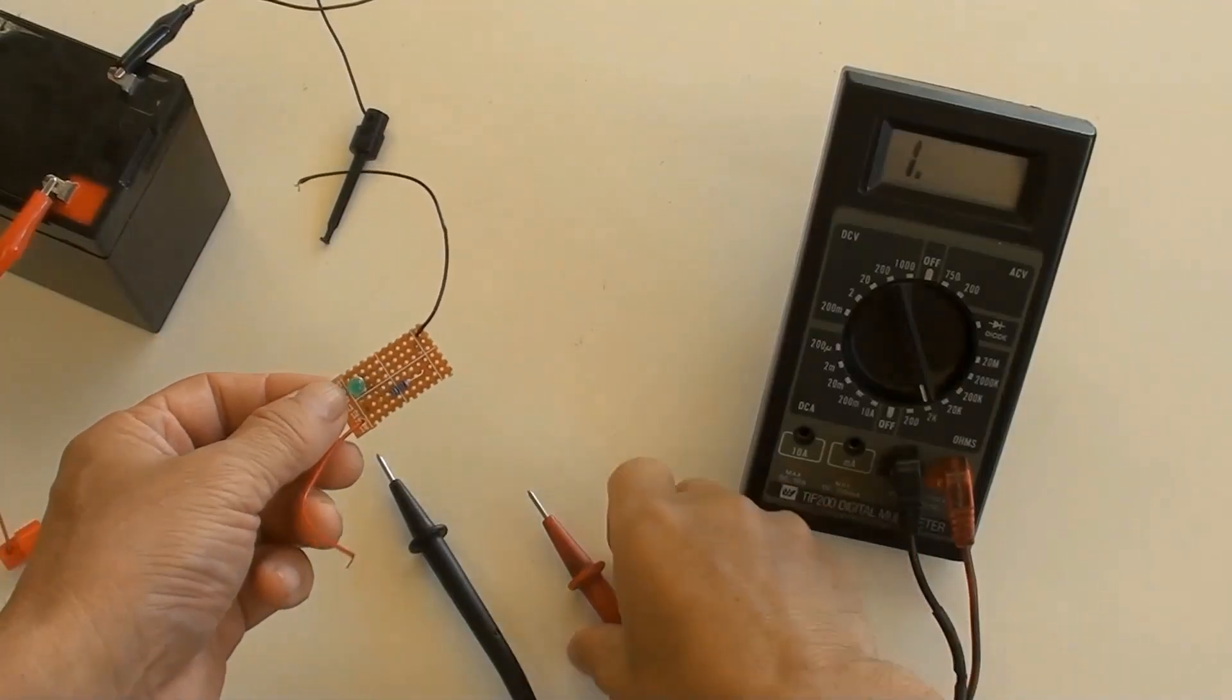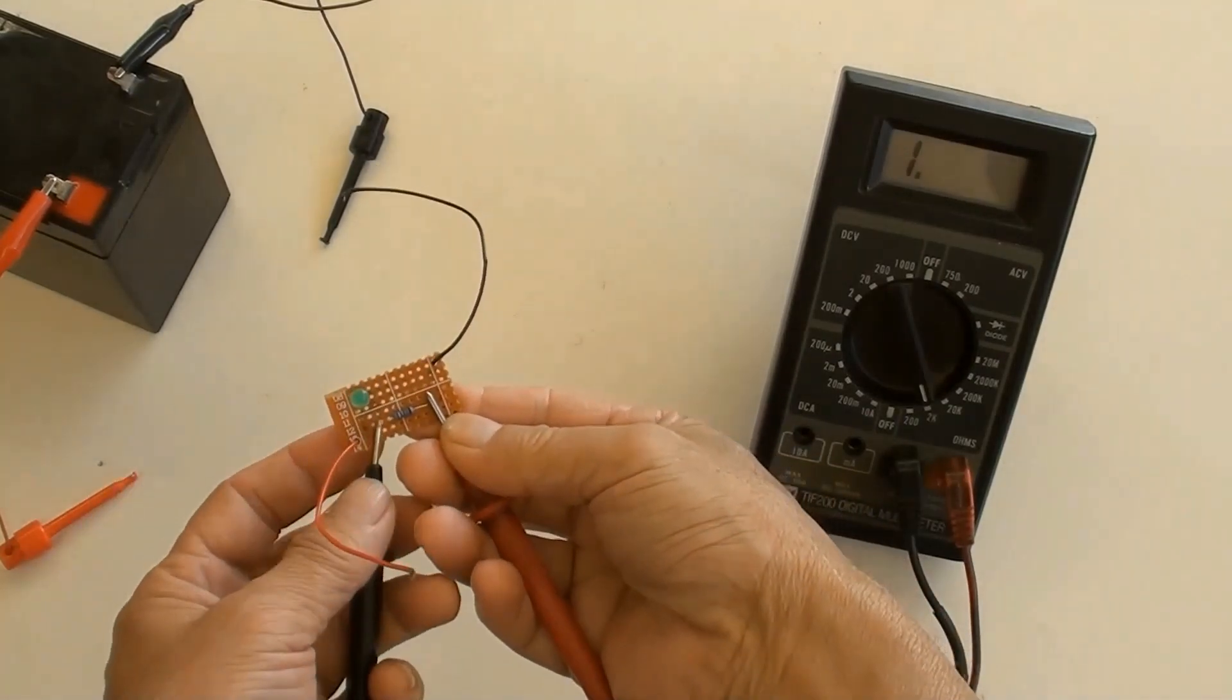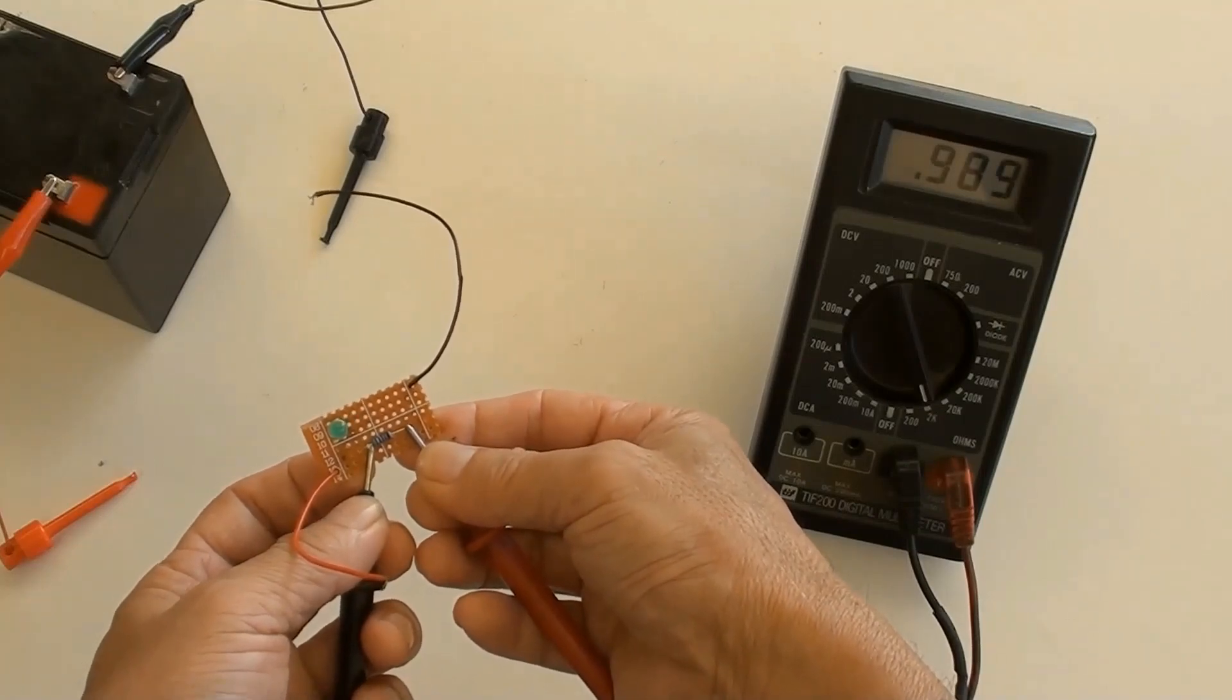This PCB was made by that circuit and now checking the resistors value. 990 ohms was indicated by the multimeter.